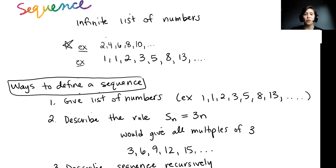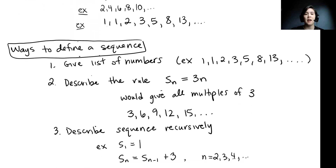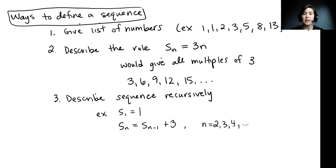We've got 2, 4, 6, 8, 10, 12, 14, 16, 18, and it keeps going on and on forever. That's one example of a sequence. Another example is 1, 1, 2, 3, 5, 8, 13, and so on — that second one is the Fibonacci sequence. So a sequence is just an infinite list of numbers.